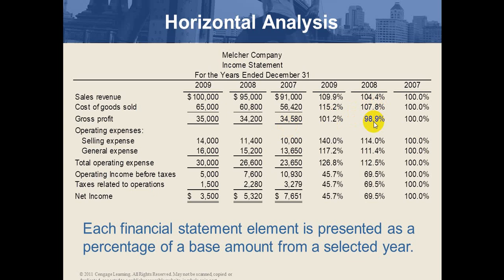You can calculate the change for the other items as well. Selling expenses change is 40% for 2009 and 14% for 2008. General expenses show 17.2% and 11.4% respectively. The year-to-year change is calculated as current year minus base year divided by base year for each line item.